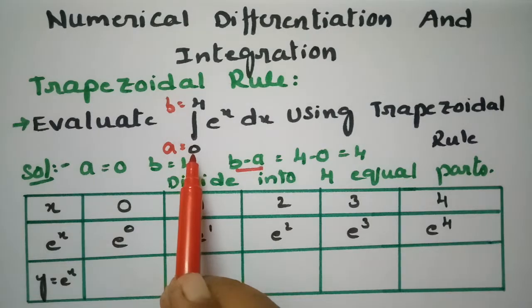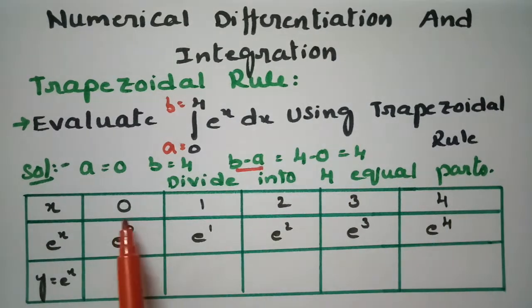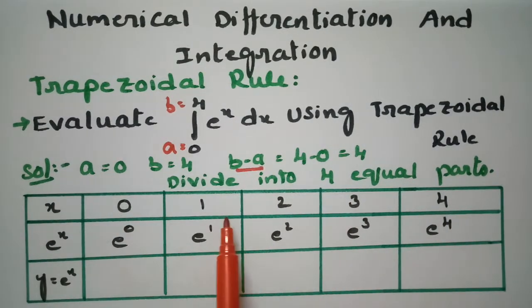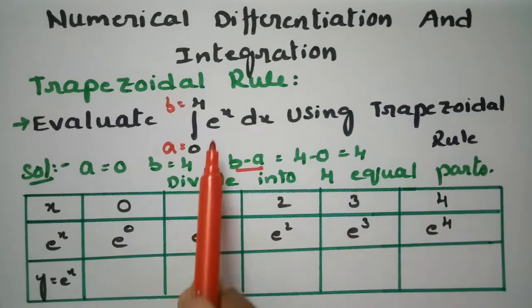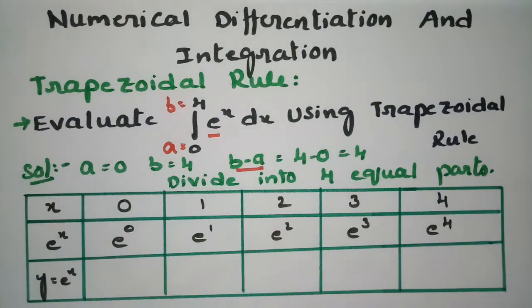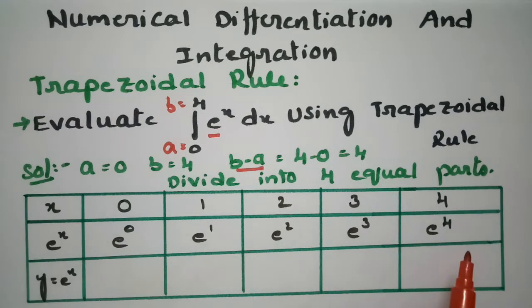Starting from 0 and ending at 4, the x values are 0, 1, 2, 3, and 4. Here what is our y value? The y value is e^x. So the corresponding y values are e^0, e^1, e^2, e^3, and e^4.